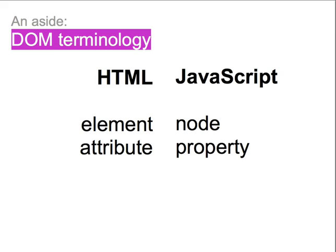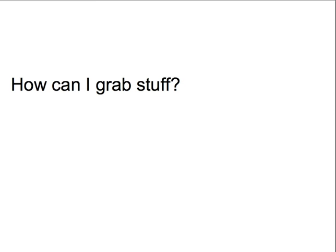You may have noticed that the terminology we use for the DOM is slightly different than the terminology we use for HTML. An element in HTML corresponds to a node object in the DOM, and the element's attributes correspond to properties of the node object. So, if the DOM is a mechanism that JavaScript uses to change bits of a webpage, how can we grab a specific element so that we can do stuff with it?